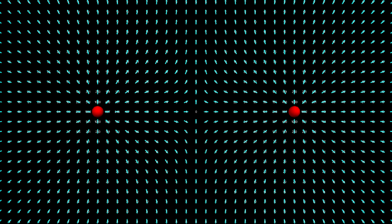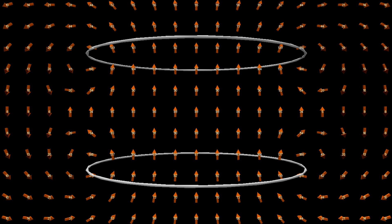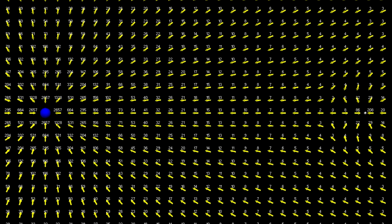This same process can be done for the electric field for two positive charges, or five random charges, or the magnetic field from two circular coils, or even the gravitational field from the earth and the moon.